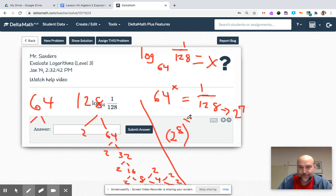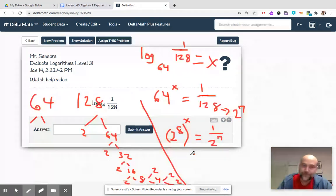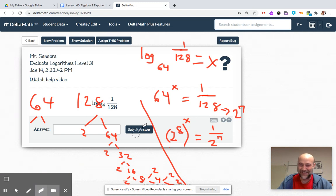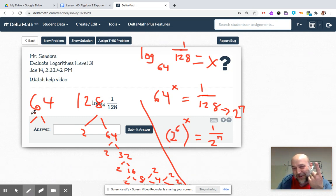Two to the x equals one over two to the seventh. You can even count on your fingers too if you want, that's one of the few times I count on my fingers. Two, four, eight, sixteen, thirty-two, sixty-four. I got six fingers held up.